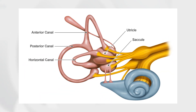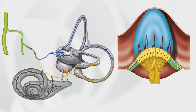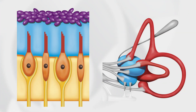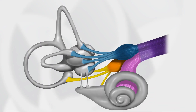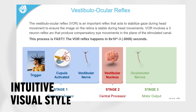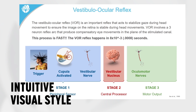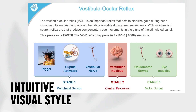We understand the importance of visual learning, so we've created brand new anatomical illustrations that clearly show all the organs and neural pathways of the vestibular system. Our unique visual style will allow you to intuitively and visually understand the anatomy like never before.